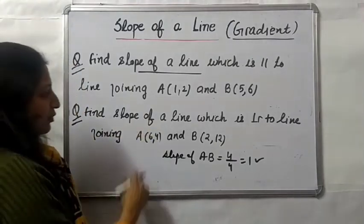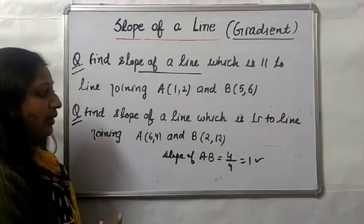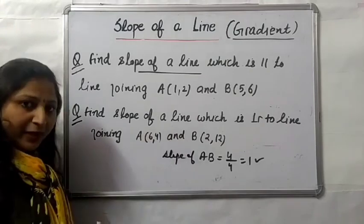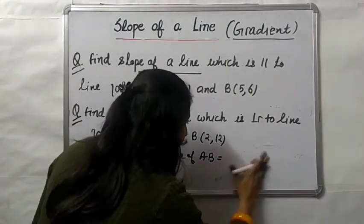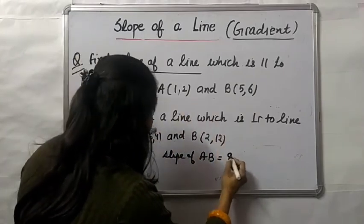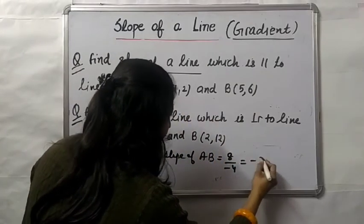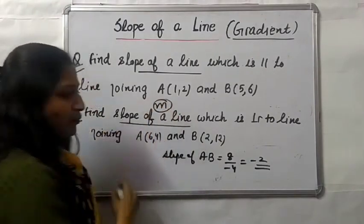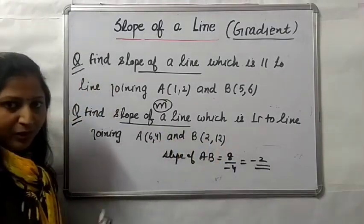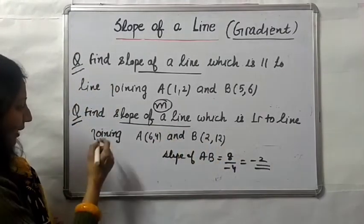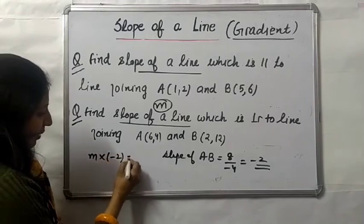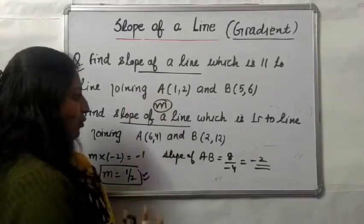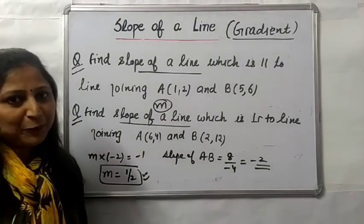Next question: find the slope of a line which is perpendicular to the line joining A(6, 4) and B(2, 12). Slope of AB = (12 − 4) / (2 − 6) = 8 / (−4) = −2. Let the slope of the required perpendicular line be m. Since both lines are perpendicular, m · (−2) = −1, which gives m = 1/2. So the required slope is 1/2.